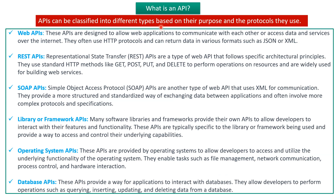APIs can be classified into different types based on their purpose and the protocols they use. The first one is Web APIs. These APIs are designed to allow web applications to communicate with each other or access data and services over the internet. They often use HTTP protocols and can return data in various formats like JSON or XML.